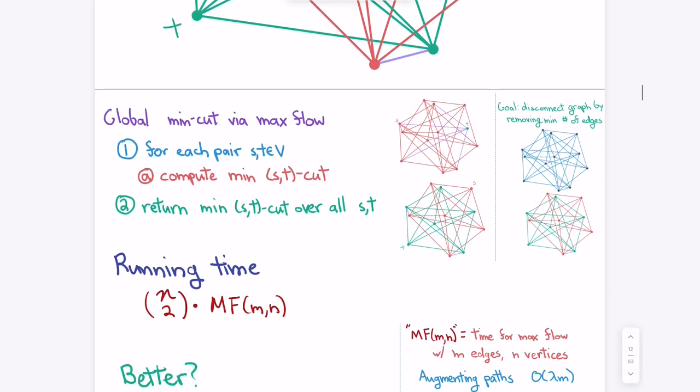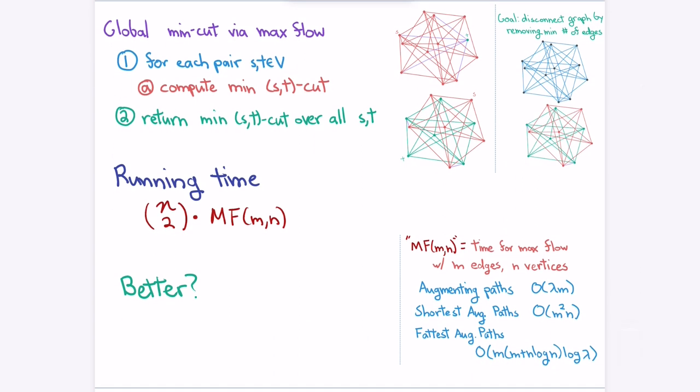That's going to take n-choose-2 max flows. Can anyone do better within this general reduction to max flow? Yes — you can fix the source, since it's on some side of the minimum cut, and then just guess one vertex on the other side, giving you n max flows instead.